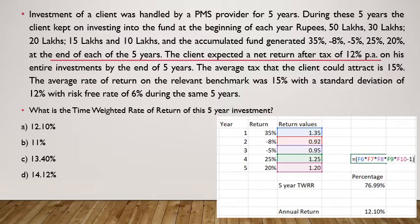Investment of a client was handled by a PMS provider for 5 years. During these 5 years, the client kept on investing into the fund at the beginning of each year — rupees 50 lakhs, 35 lakhs, 30 lakhs, 20 lakhs, 15 lakhs, and 10 lakhs were invested. The accumulated fund generated 35%, minus 8%, minus 5%, 25%, and 20% at the end of each year. So the fund was invested at the beginning and returns came at the end.